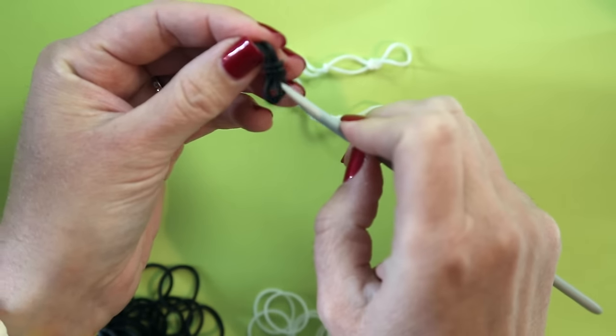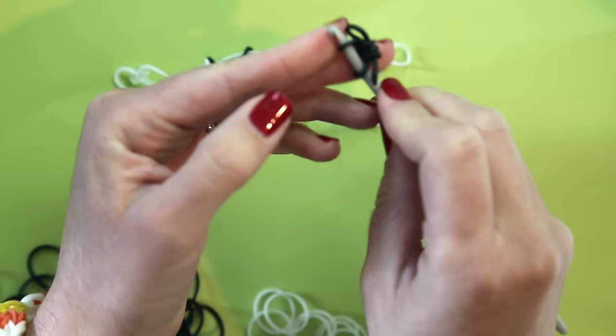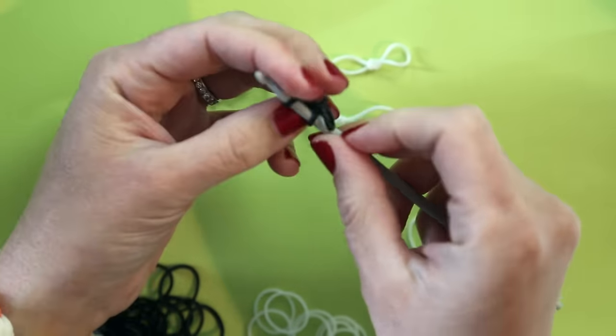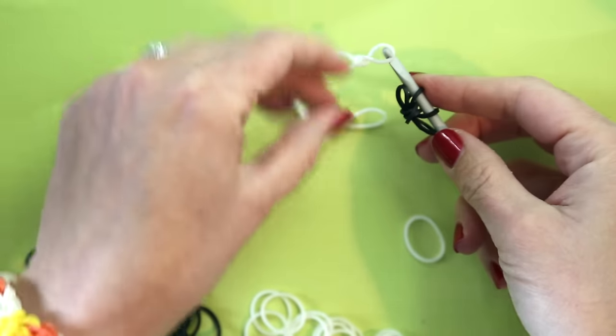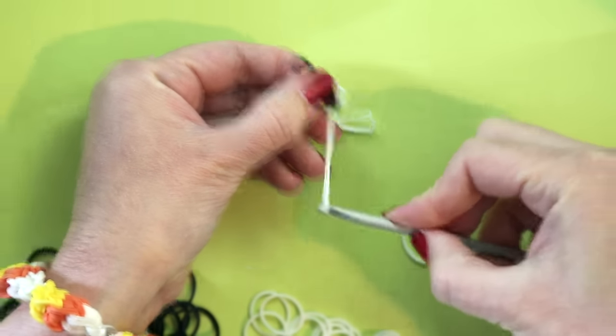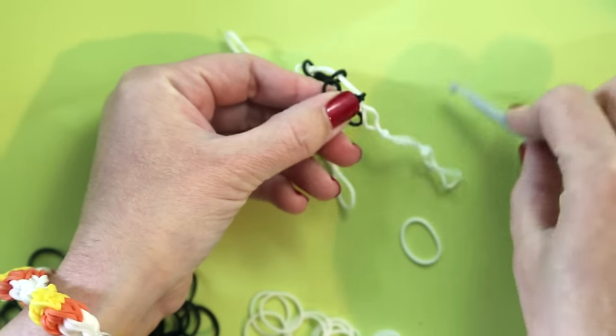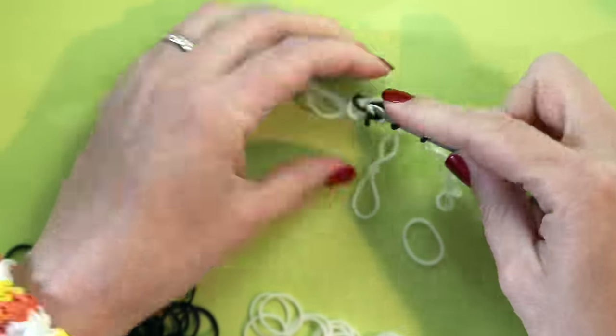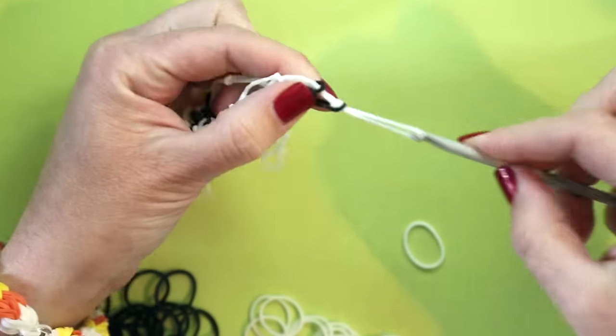Then put my hook through two of the loops like that. Catch one side of my web and pull it through the spider legs and do the same with the other side.